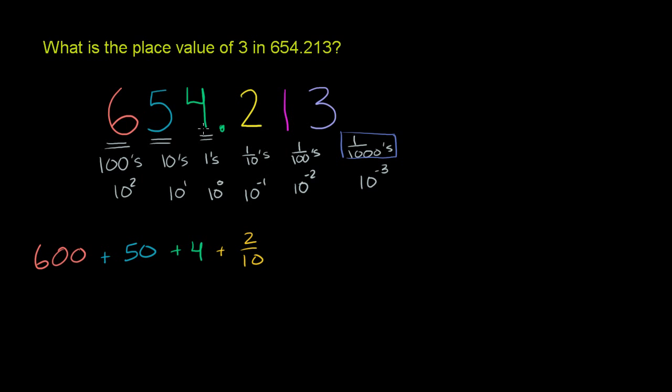Plus 1 hundredth, plus 1 hundredth, plus 3 thousandths, plus 3 over 1, 2, 3 thousandths.